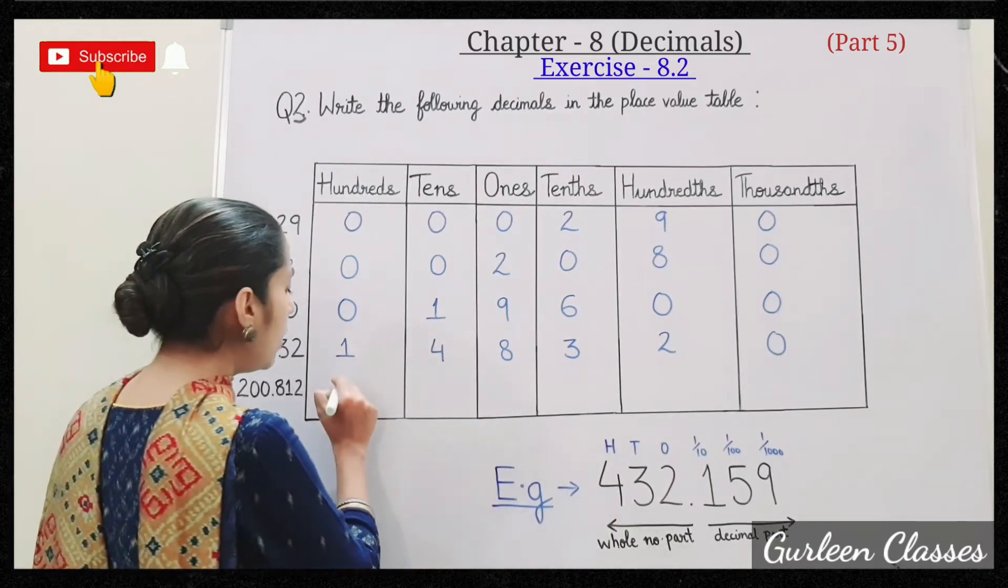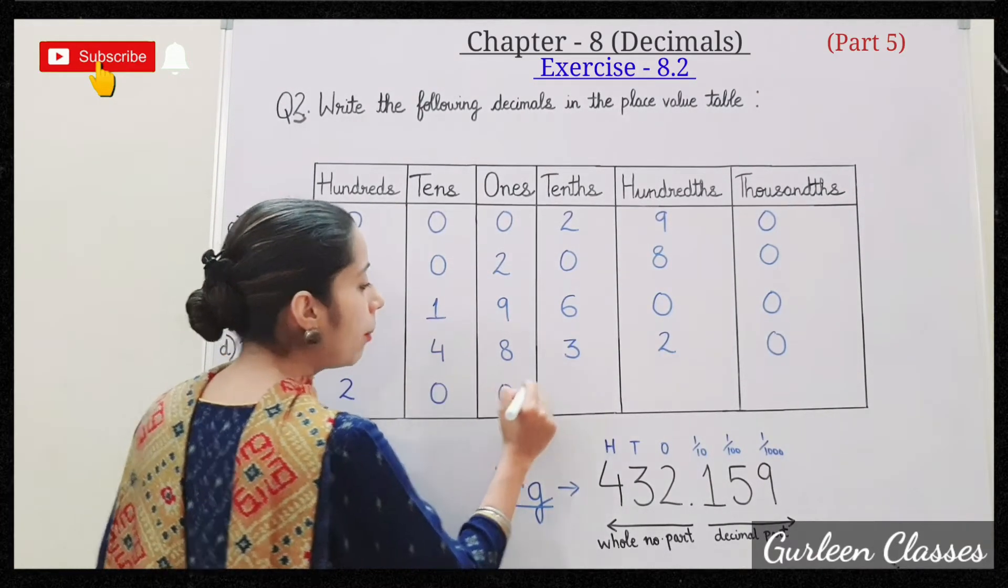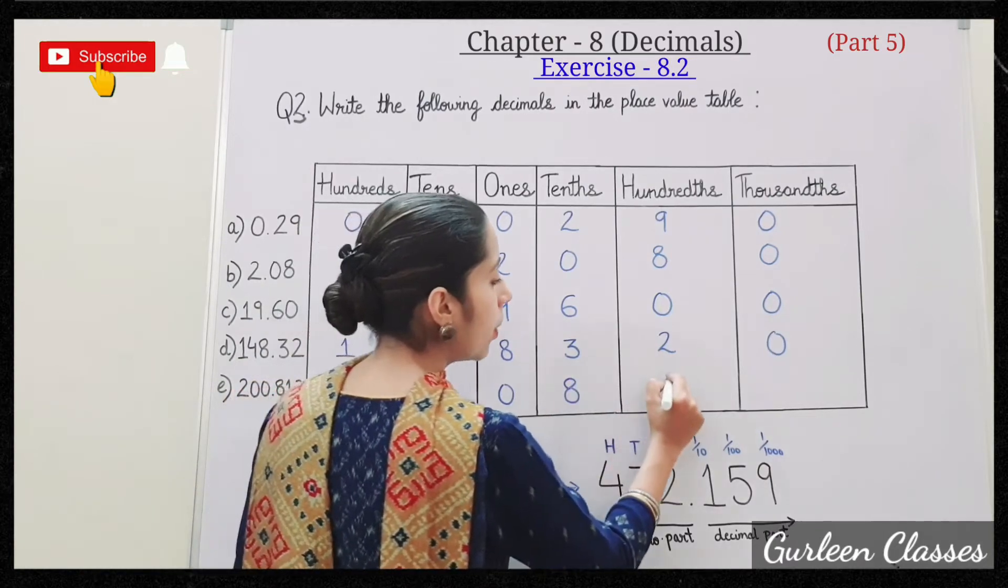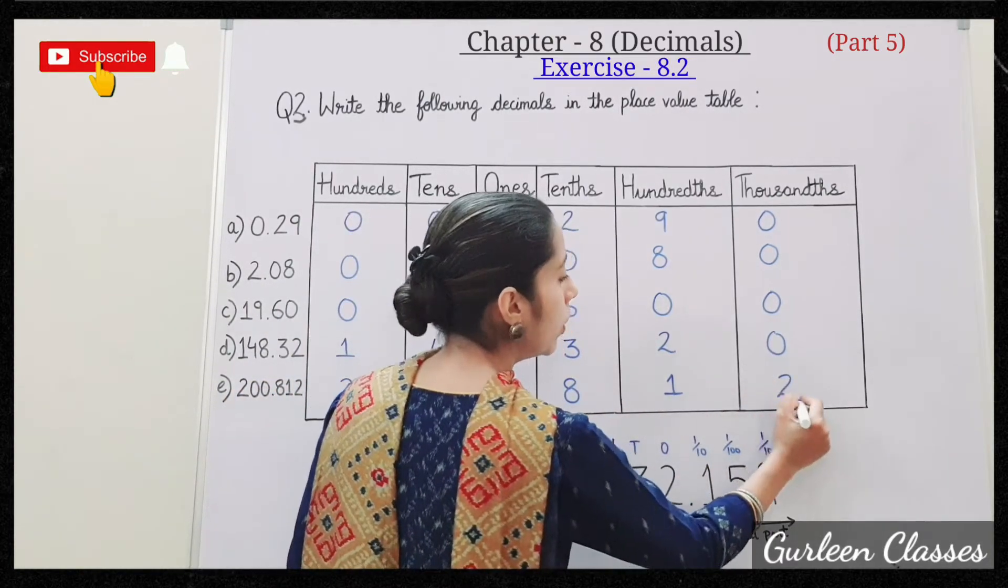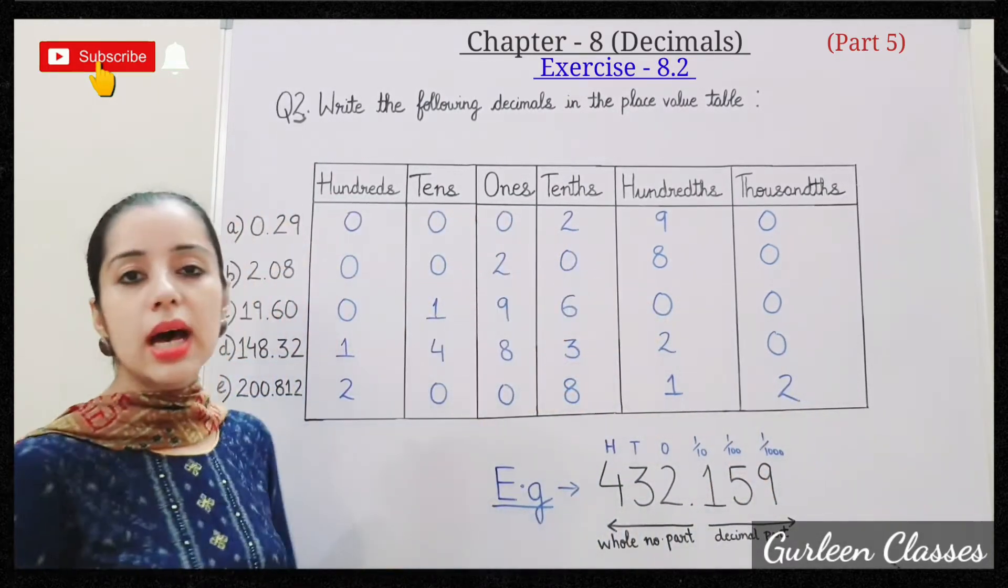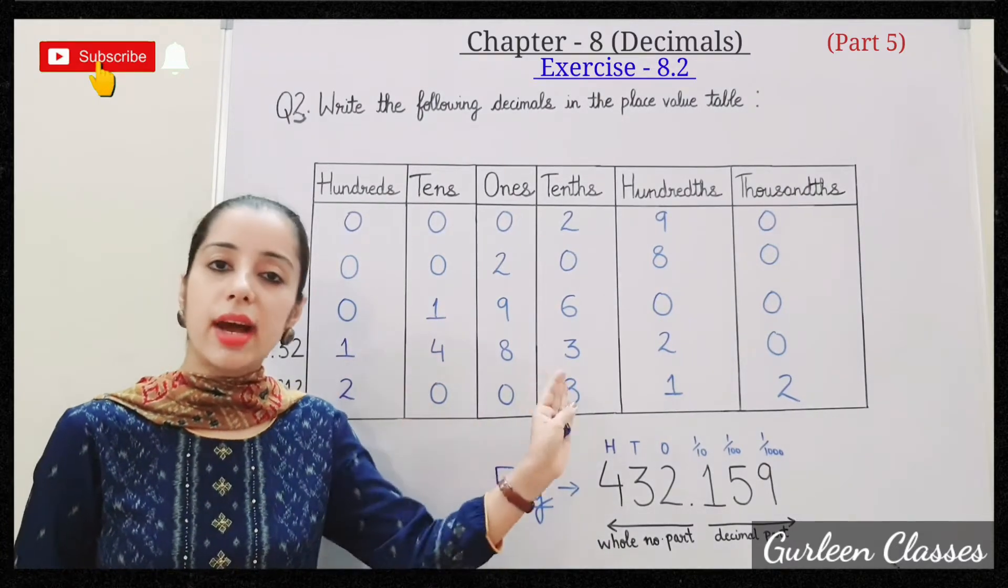E: 200.812. So 200, 200.812. Tens, hundreds, thousandths are the decimal part, decimal point right side.